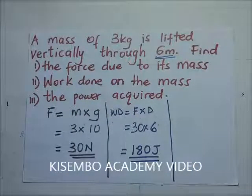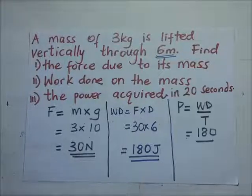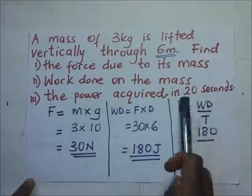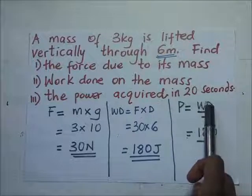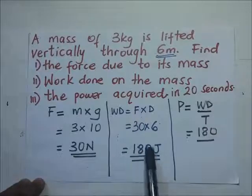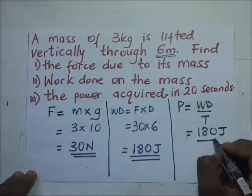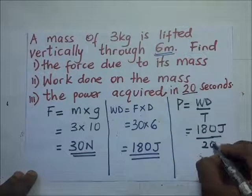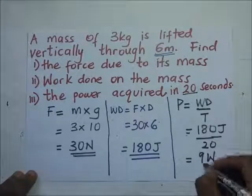Finally, they ask us to find the power required. Power is the rate at which work is done, so power equals work done over time taken. They ask for power acquired in 20 seconds. The work done is 180 joules divided by 20 seconds, which gives us 9 watts.